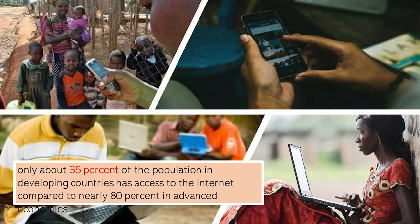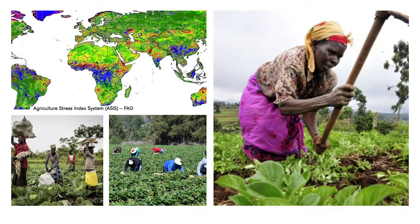Food security is another challenge many developing countries face. Shocks related to climate change, conflicts, and infectious diseases are hurting food production, disrupting supply chains, and limiting accessibility to affordable food. According to the Food and Agriculture Organization, nearly 690 million people, or close to 9% of the global population, experience hunger, up by nearly 60 million in five years.